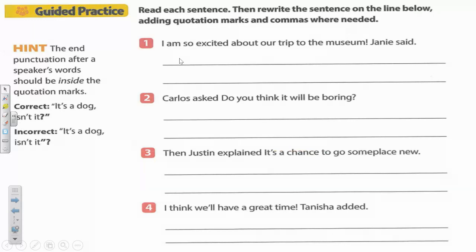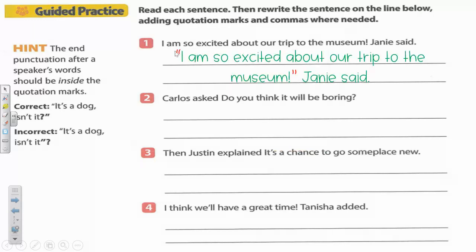Number one: I am so excited about our trip to the museum! Janie said. All this one needs is some quotation marks. Think about what words are coming out of Janie's mouth. Make sure you put quotation marks before 'I' and after the exclamation mark in 'museum.'